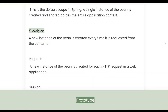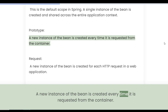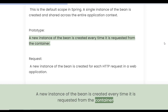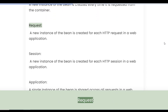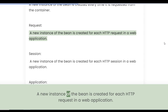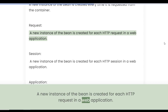Prototype: A new instance of the bean is created every time it is requested from the container. Request: A new instance of the bean is created for each HTTP request in a web application.